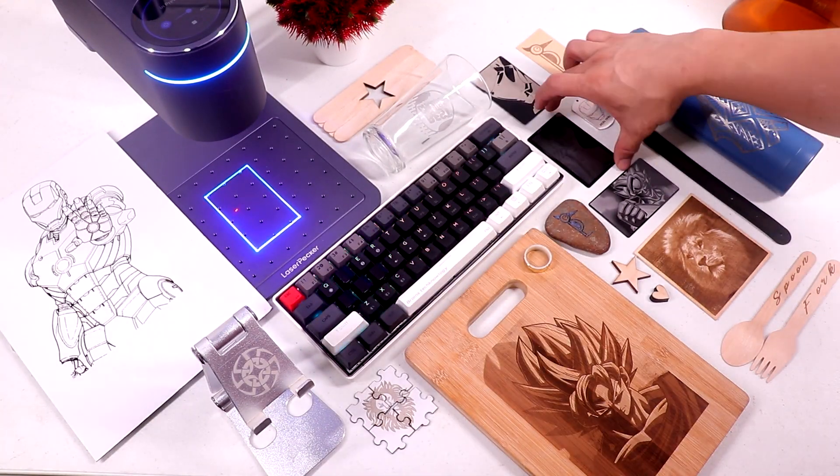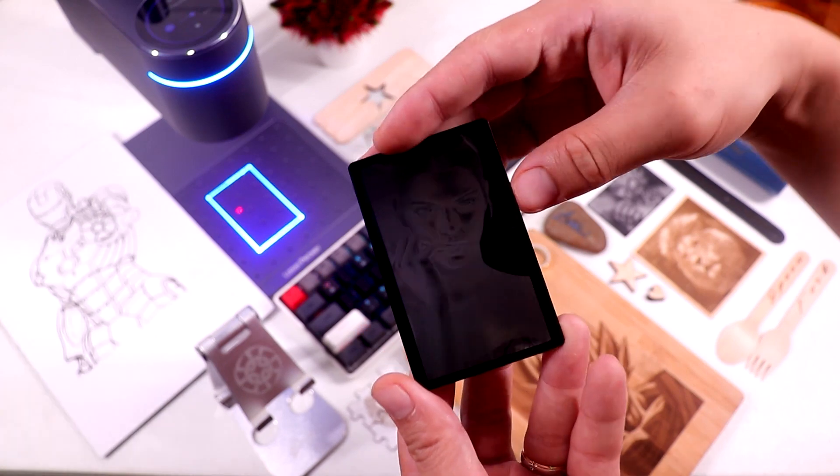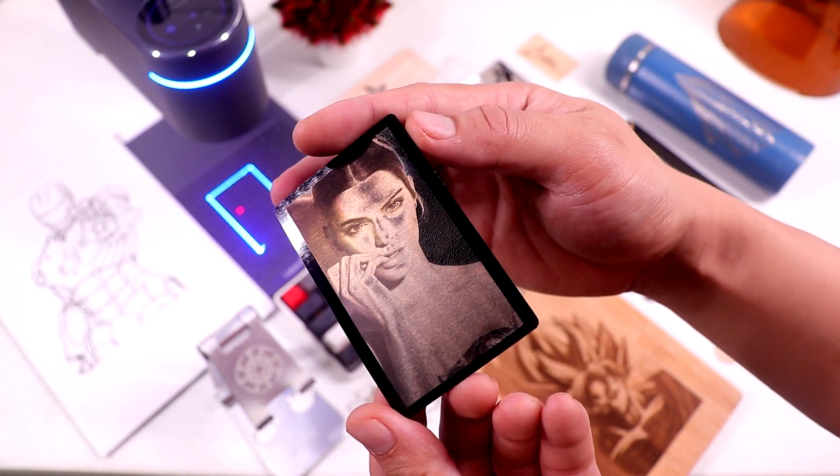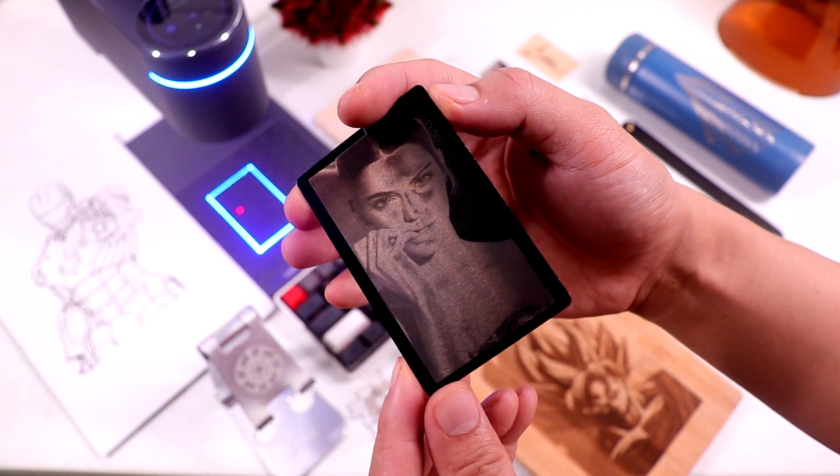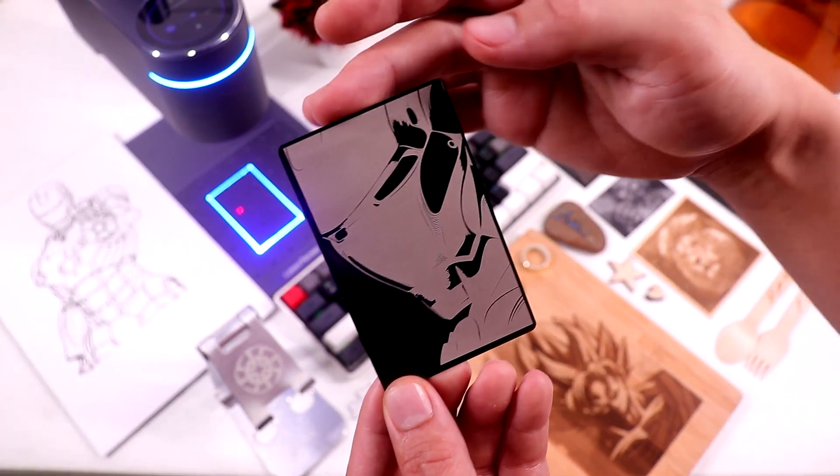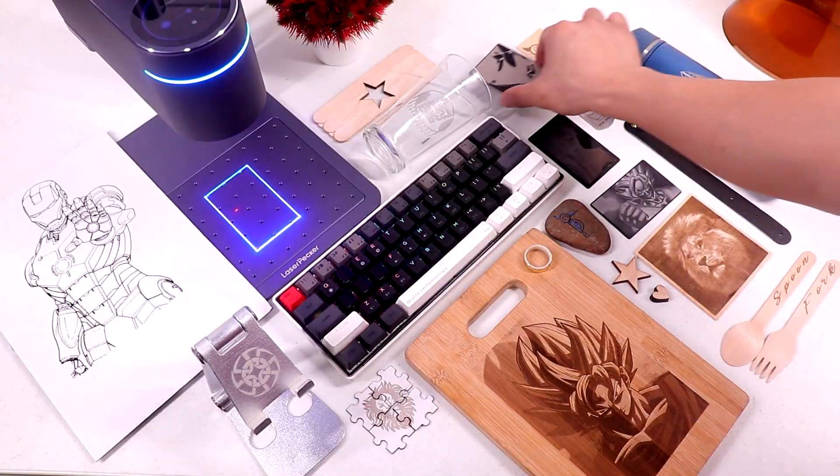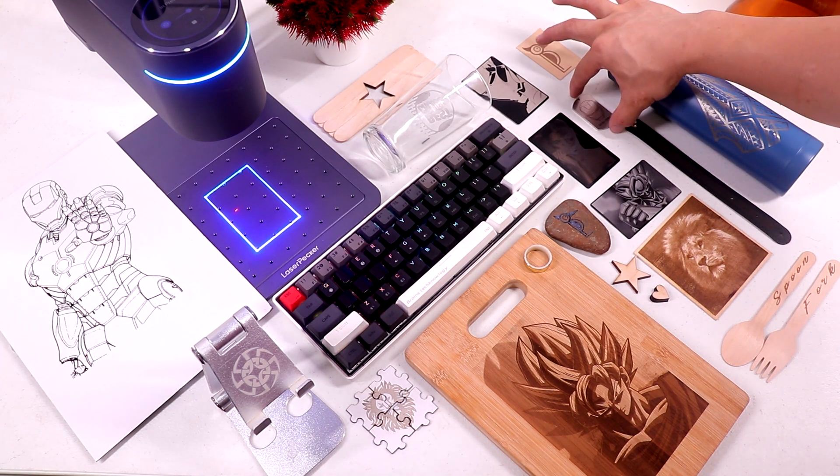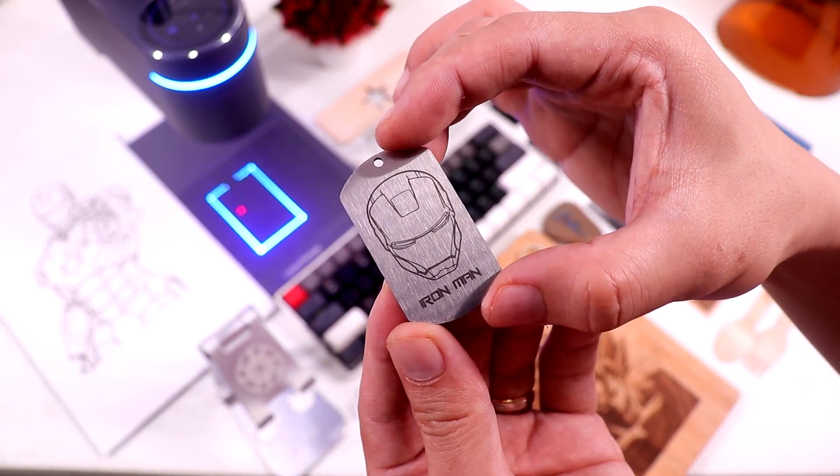And then I also tried engraving Kendall Jenner on this metal card. So as you see, the result is impressive. And then we have an Iron Man here. And then another Iron Man on a stainless steel dog tag. So the engraving is nice and clean.